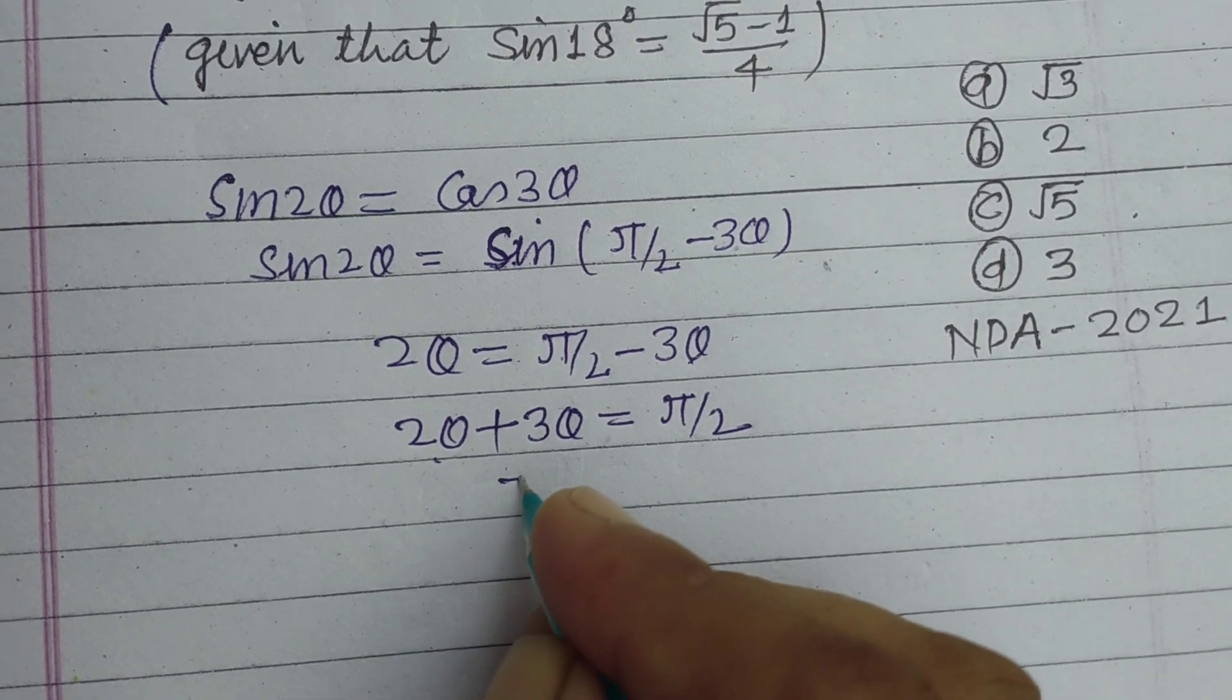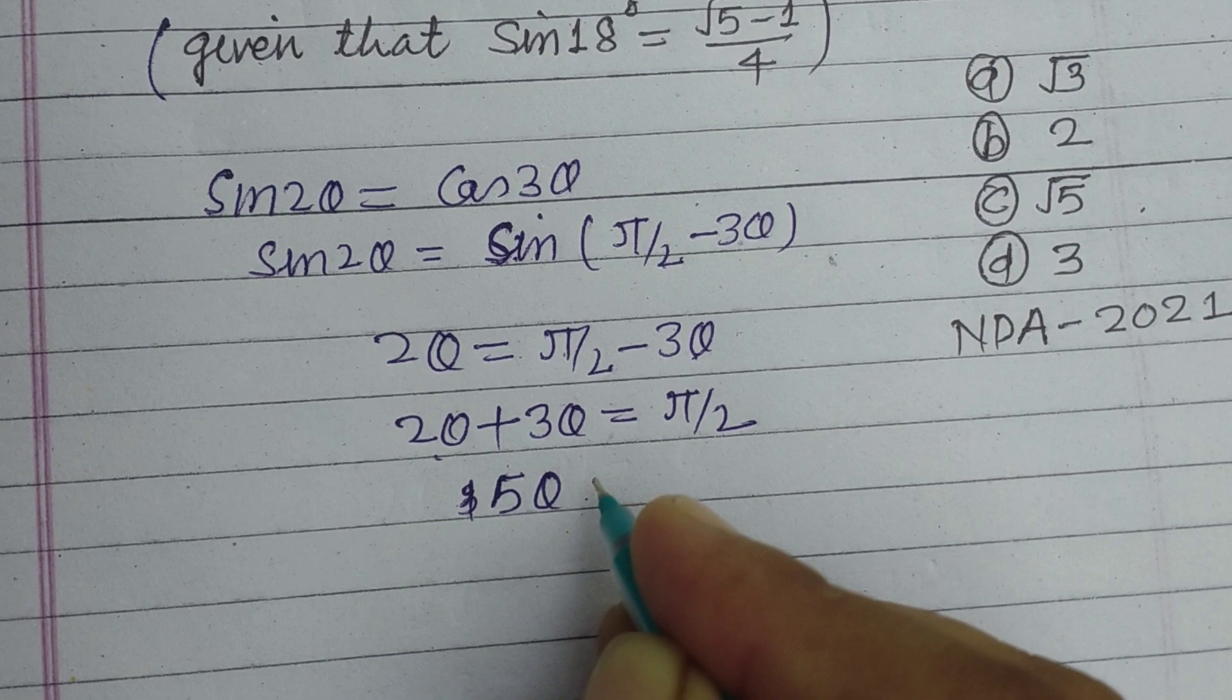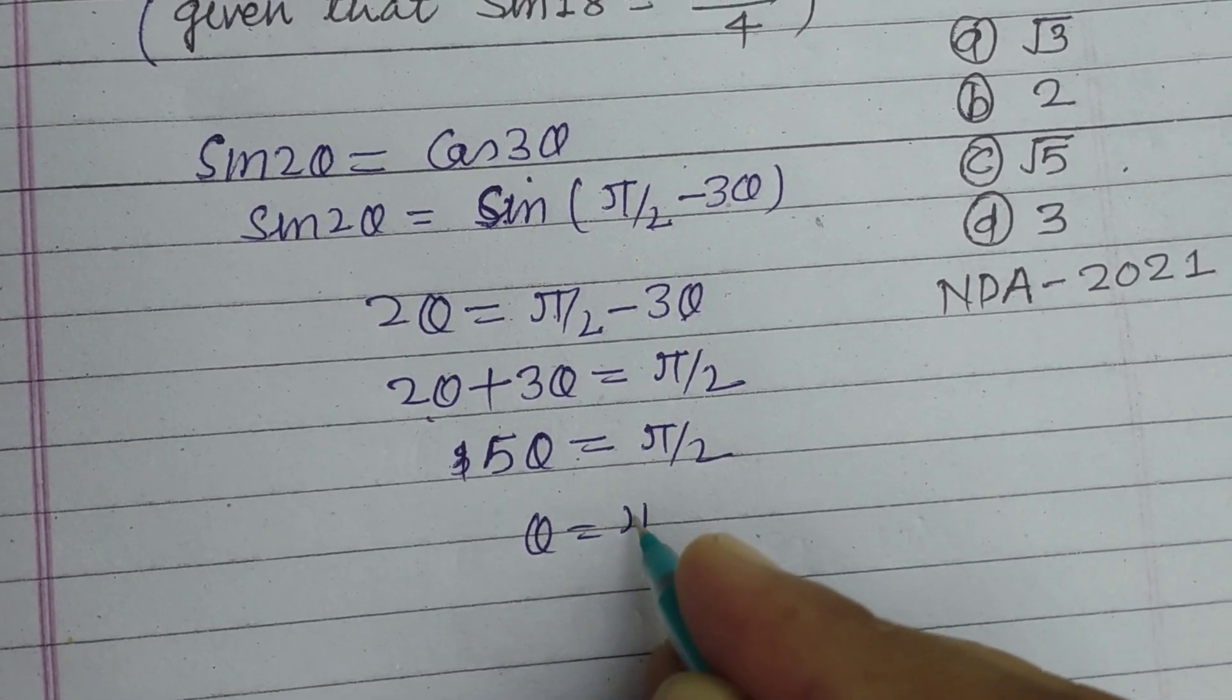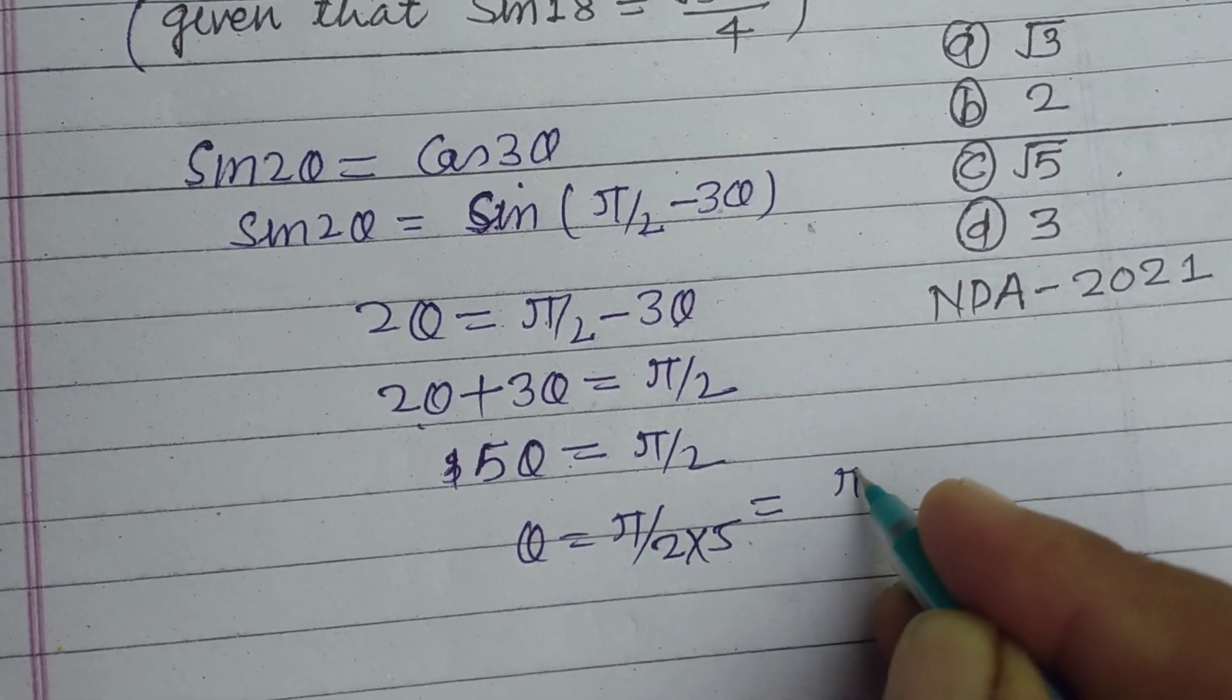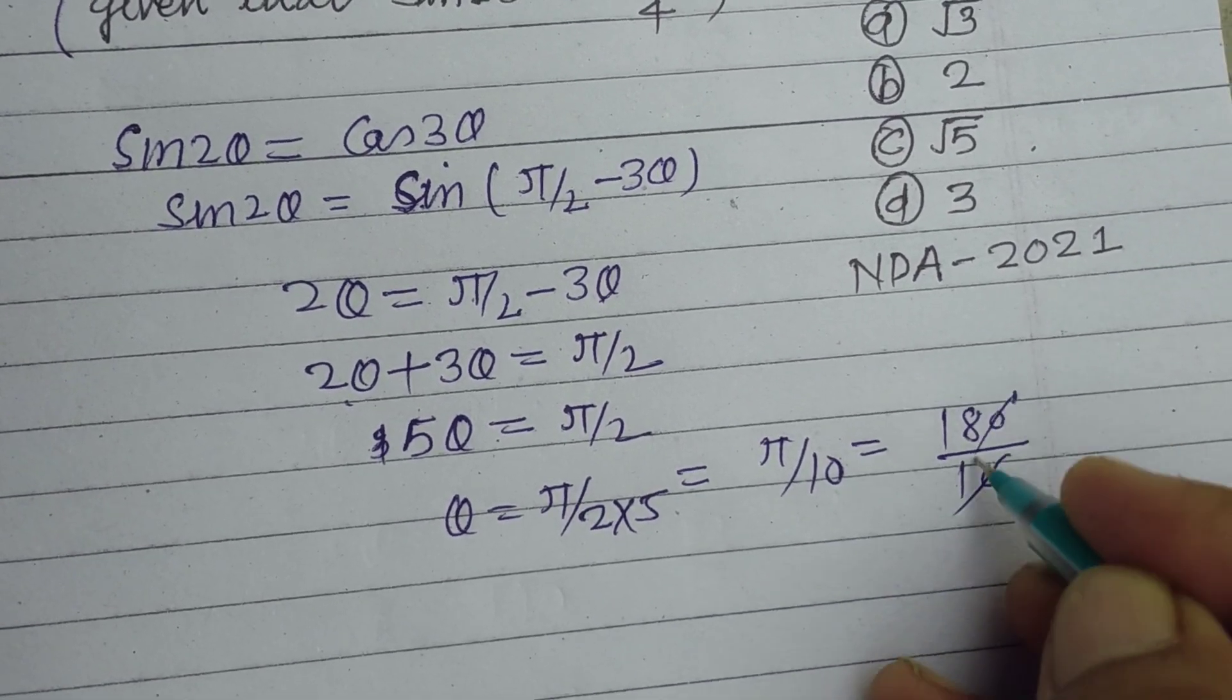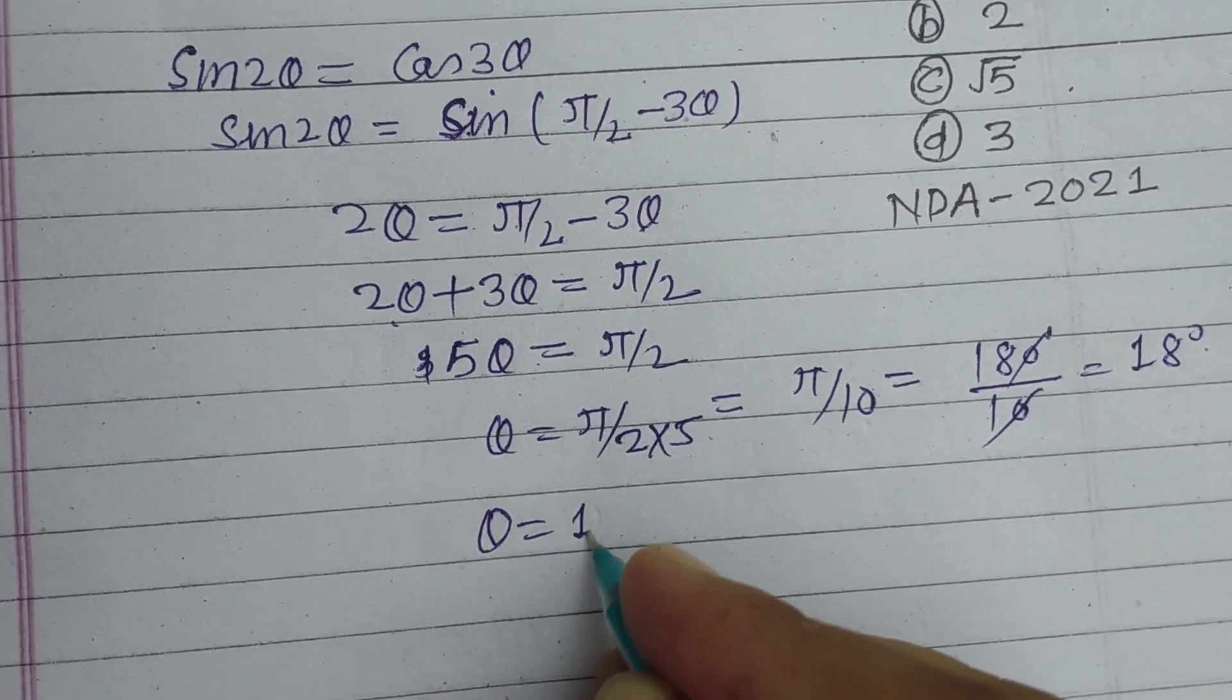Therefore θ equals pi by 2 divided by 5, or pi by 10. Pi value is 180 degrees divided by 10, so this will be 18 degrees. Therefore θ is 18 degrees.